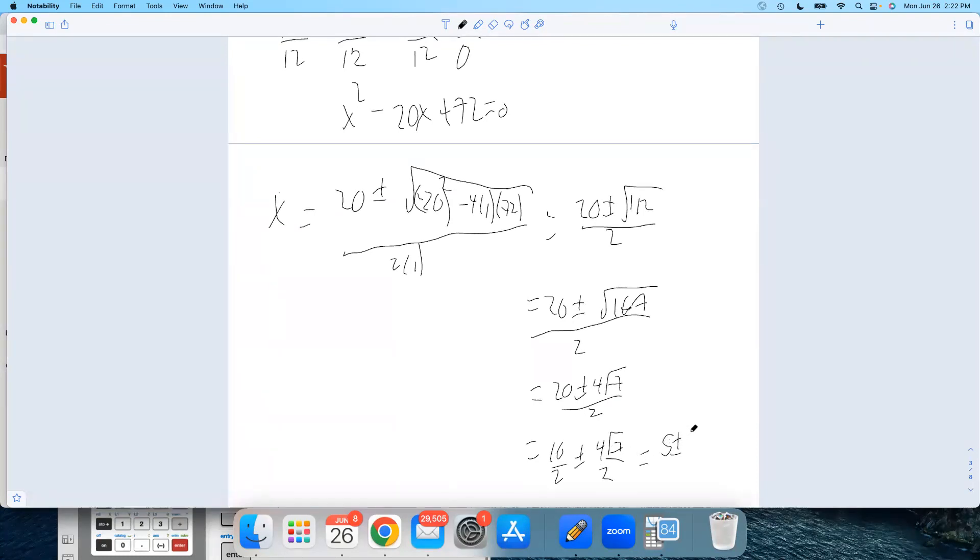And then I could simplify both of those. 5 plus or minus. Oh, I'm sorry. Sorry, I lied to you. This is 20 still. So 20 divided by 2 is 10, plus or minus 2 root 7.